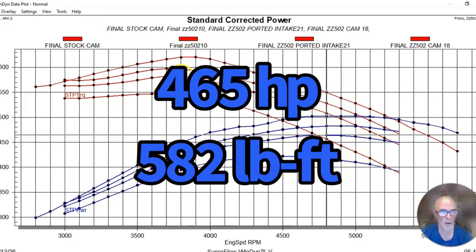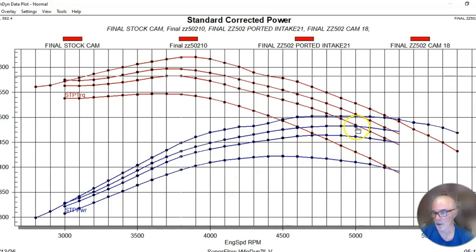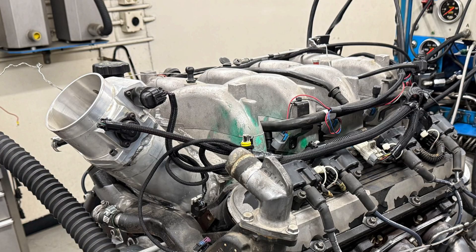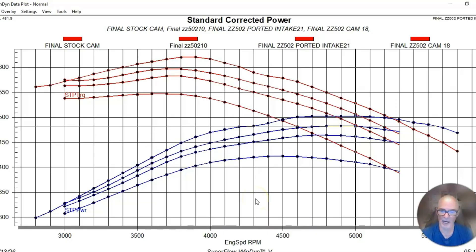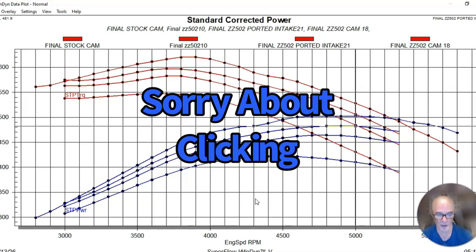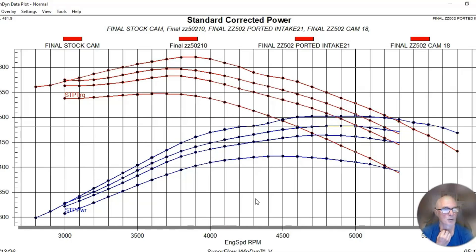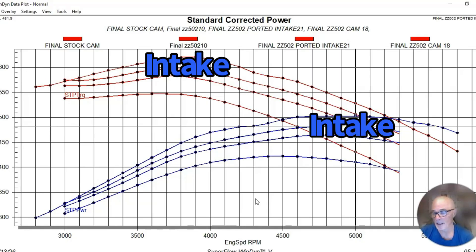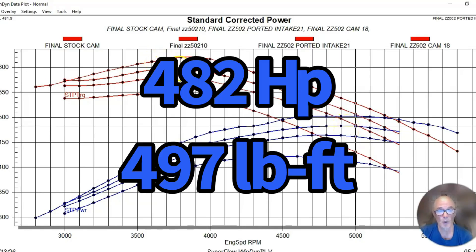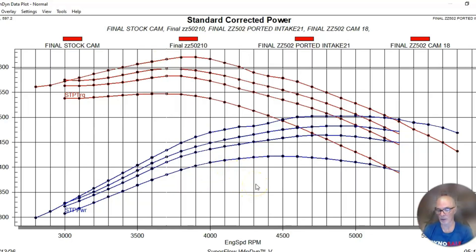That picked up like 40, 45 horsepower, so we're up at 465 horsepower and 582 foot pounds of torque. We then installed the ported factory intake manifold. They had porting and welding with a different entry, a much larger entry, and it flowed a lot more. This one was done by Amos. We picked up about another 20 horsepower - 482 horsepower and 497 foot pounds of torque.